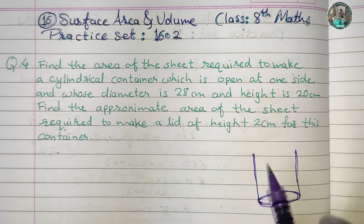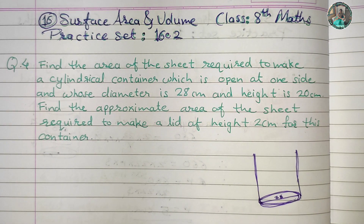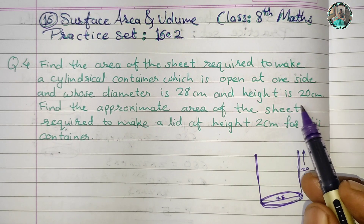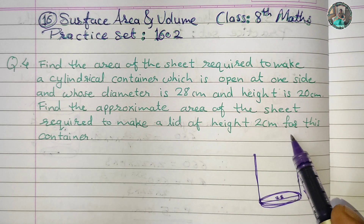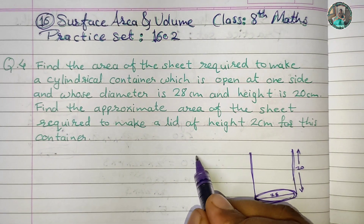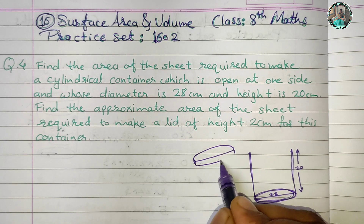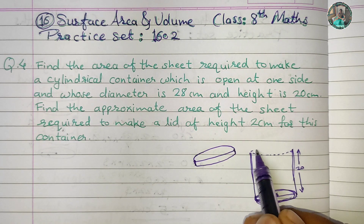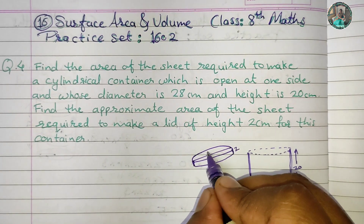The diameter of the cylinder is 28 cm and the height is 20 cm. We also need to find the approximate area of the sheet required to make a lid of height 2 cm for this container. The lid has a height of 2 cm and diameter of 28 cm.